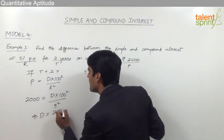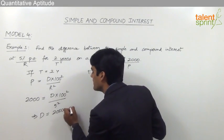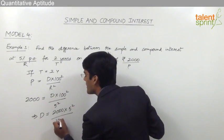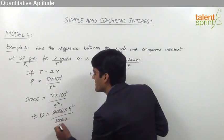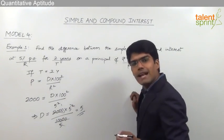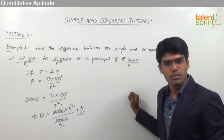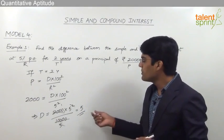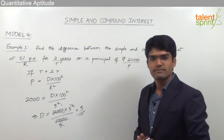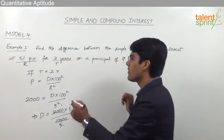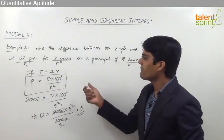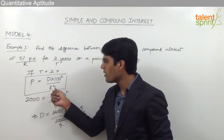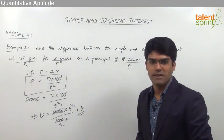From this, the difference D can be found as 2000 into 5 squared divided by 100 squared. 100 squared is 10,000. Now 2000 goes 5 times and 5 and 5 get cancelled, so the difference between simple interest and compound interest in this case will be Rs. 5. This is how with the formula P equals D into 100 squared by R squared, we can find the difference, principal, or rate of interest when the other two values are specified.